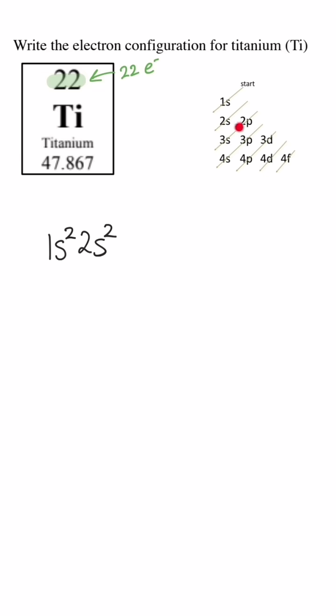Follow the next arrow, we get to the 2P. A P sublevel can hold a max of 6 electrons. The 3S, that can hold 2 electrons, then the 3P, that's another 6 electrons.